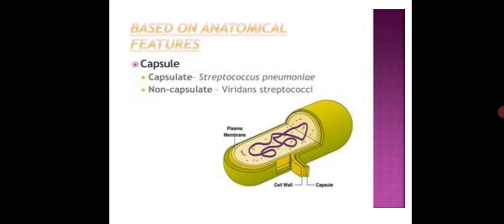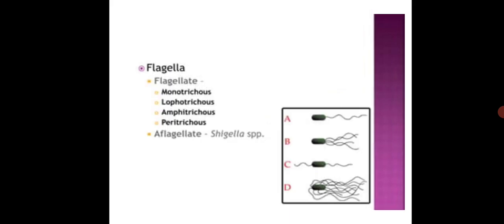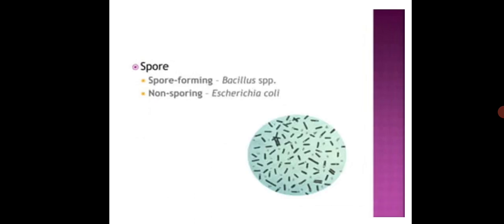Based on anatomical features: Capsulate like Staphylococcus pneumoniae and Encapsulate like Viridans streptococci. Flagella: Monotrichous, Lophotrichous, Amphitrichous, Peritrichous. Spore: Spore forming like Bacillus species, Non-sporing.